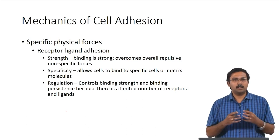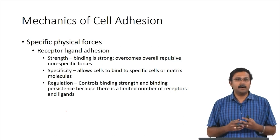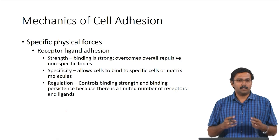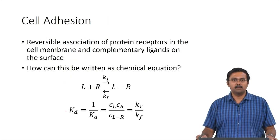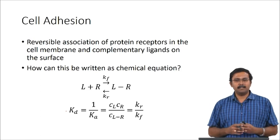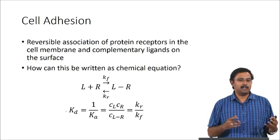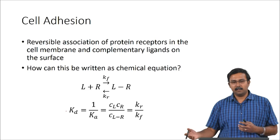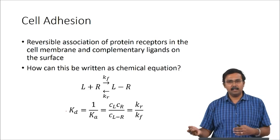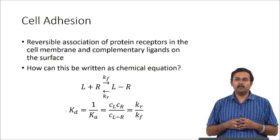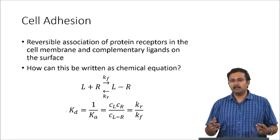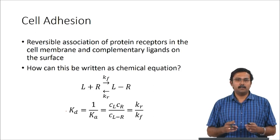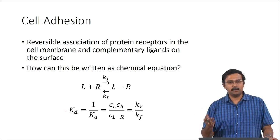Receptor-ligand binding actually controls the binding strength and the binding persistence because there are limited numbers of receptors and ligands on the surface. Based on that, you can regulate how strong the binding is and where it actually binds. When we talk about cell adhesion in general, we are talking about this ligand-receptor binding — the reversible association of protein receptors in the membrane to complementary ligands, which could be present on the surface or on another cell.